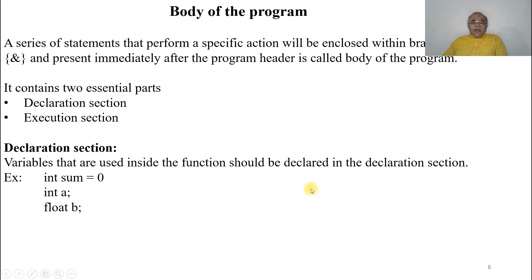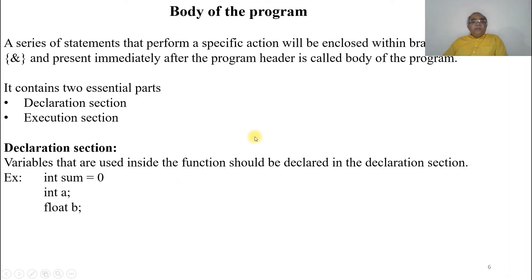Where 'a' is one number, 'b' is another number, and 'sum' is the result. These can be declared as: int sum; int a; float b; This is how variables are declared. We can also initialize values, like int sum = 0. This is just an example of how we can initialize and declare variables.